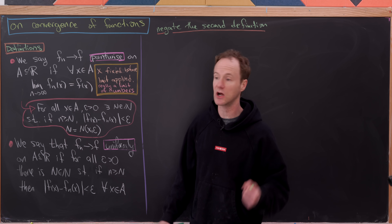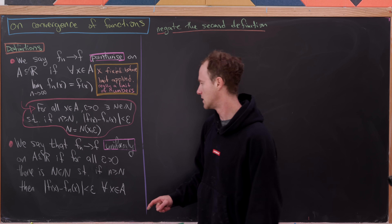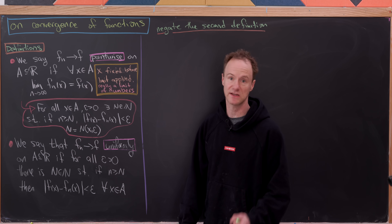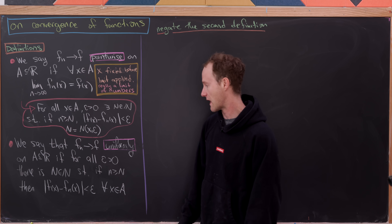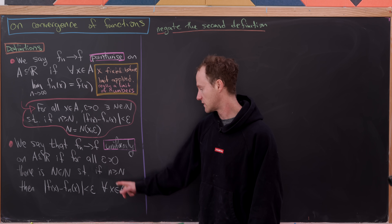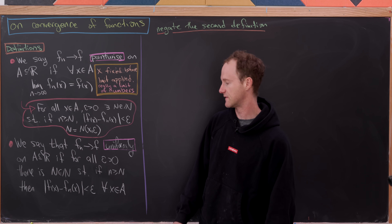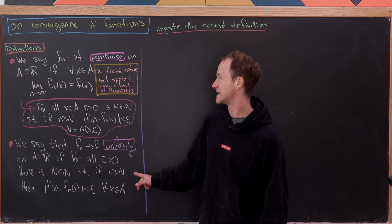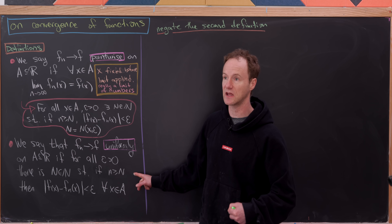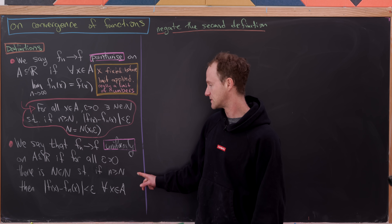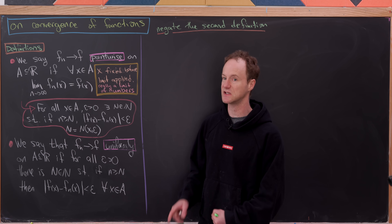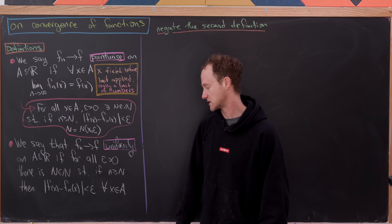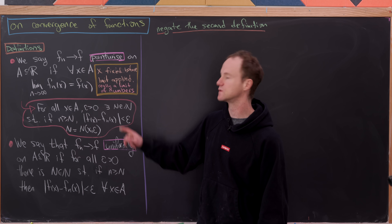Now let's compare with uniform convergence. A sequence of functions f sub n converges to f uniformly on a set A if, for all epsilon > 0, there is a natural number N so that if n > N, then |f(x) − f_n(x)| < epsilon for all x in A. This is a true limit of functions because N only depends on epsilon, not on the point x we're looking at.